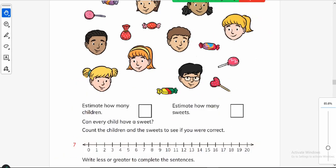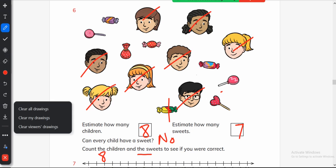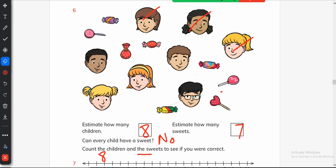Estimate how many children. I guess they are eight. How many sweets? I think they are less and they are seven. Can every child have a sweet? I think no. Now count the children and the sweets to see if you were correct. Children were eight and number of sweets, wow, the sweets are also eight. So I was incorrect and every child will get a sweet.